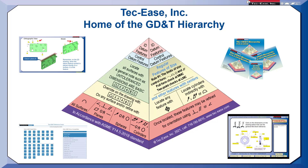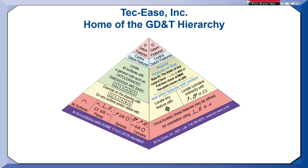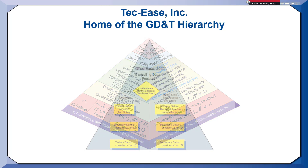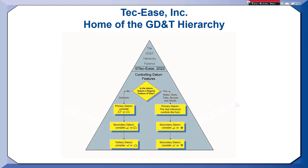What is the GD&T hierarchy? It is a simple way to learn a complex subject. The hierarchy shows you how symbols are related and how you can use these relationships to make better choices when applying GD&T to a design.